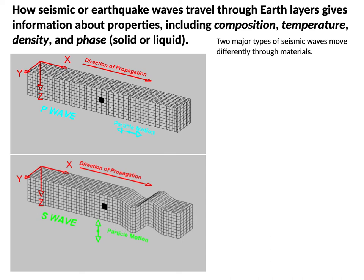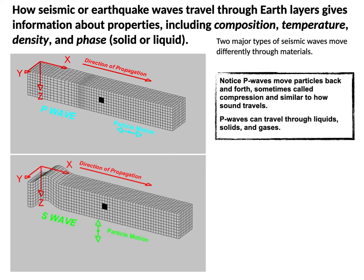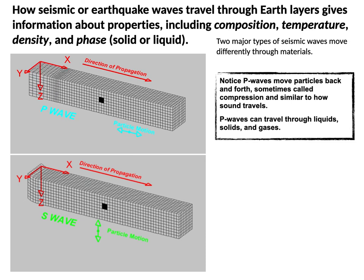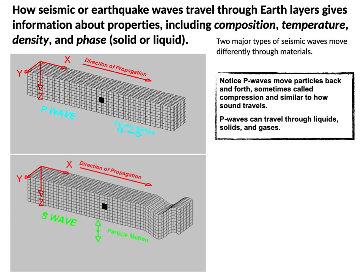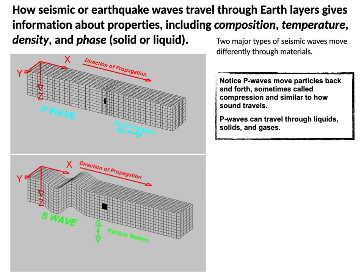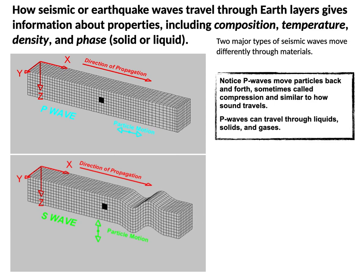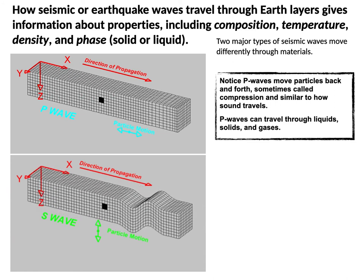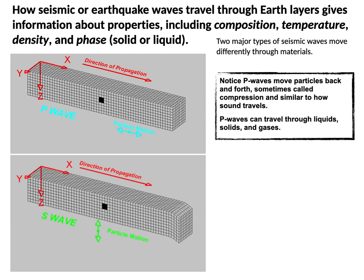P waves move particles basically back and forth — sort of like a slinky. These are called compression waves or P waves, also called primary waves. They move the fastest of any seismic wave. Because of the way they move through materials, P waves can travel through liquids, solids, and gases — similar to sound waves, which you can hear through any of those media.